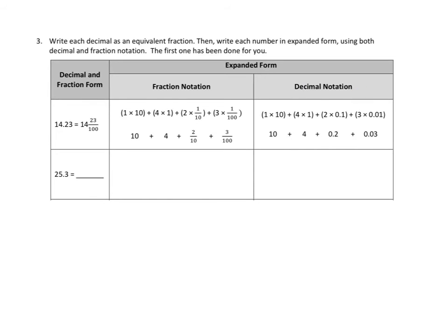Then they move on to decimal notation and do this exact same exercise all over again, except this time with decimals. Our whole numbers are the same — we have one copy of ten and four copies of one. But now we have the decimal version of a tenth, so we have two times 0.1 and three times 0.01. Then we do that multiplication: one times ten is ten, four times one is four, two times one-tenth is two-tenths, and three times one-hundredth is three-hundredths.